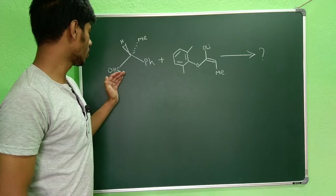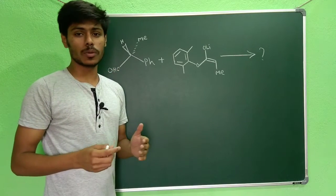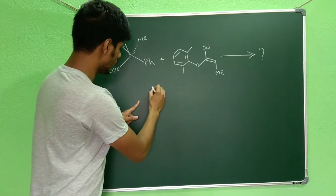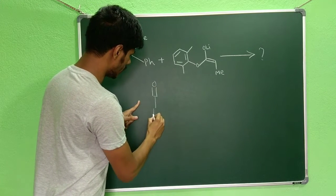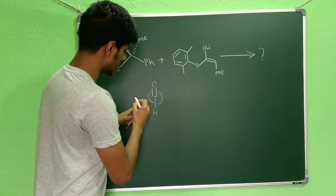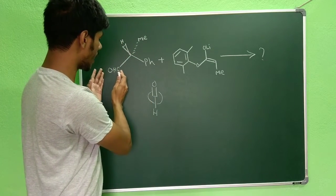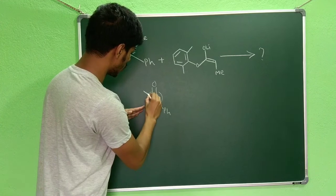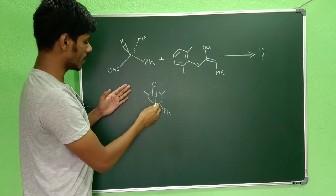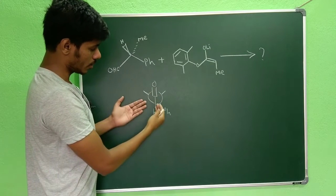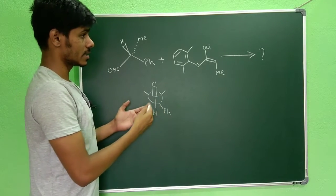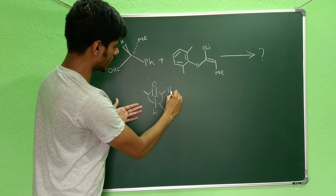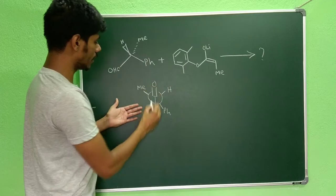Let me first draw this carbonyl compound in the Newman projection formula in order to predict its stereochemical outcome using the Felkin-Anh model. We are viewing this aldehyde group from the front. If we place the phenyl group coincident with — that is, eclipsed with — this hydrogen, then this hydrogen is above the plane, so it will go to the right-hand side, and the methyl will go to the left-hand side.